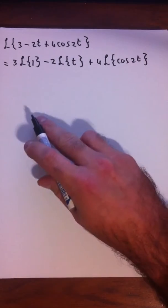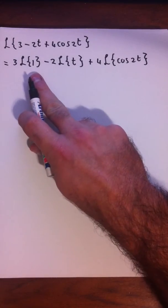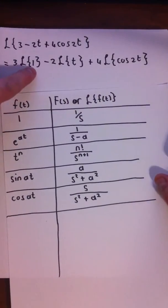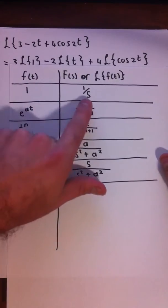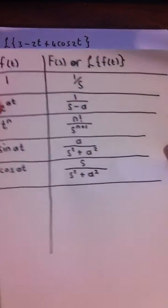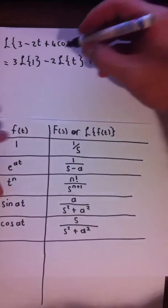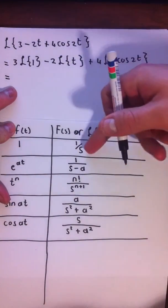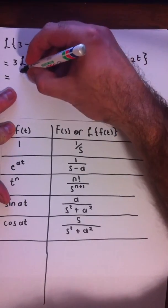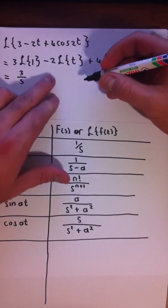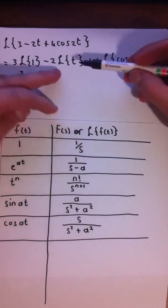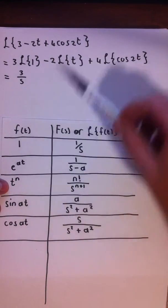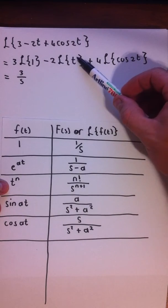Now we look at the table. The Laplace transform of 1 is just 1/s. So we write 3 times 1/s, which is 3/s. Then we need the Laplace transform of t. If the function is t to the nth power, that's t to the first power here.